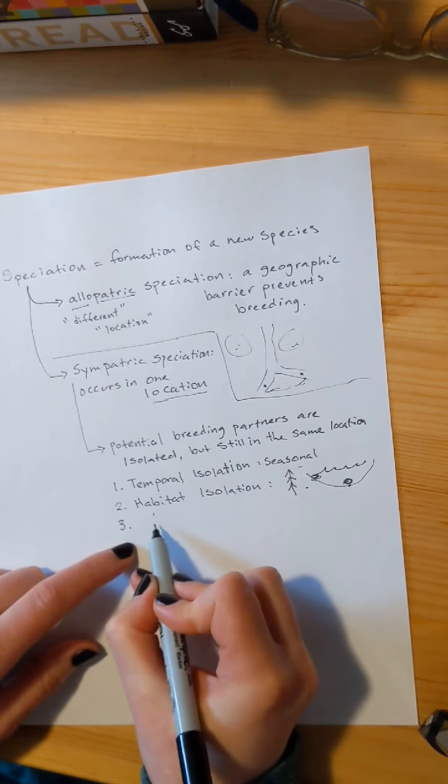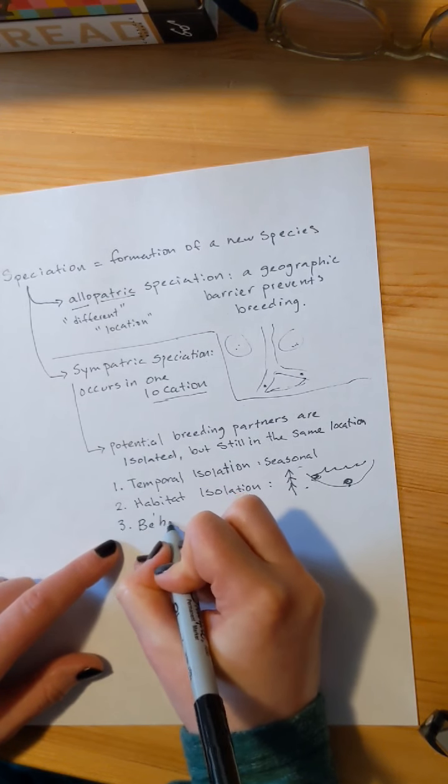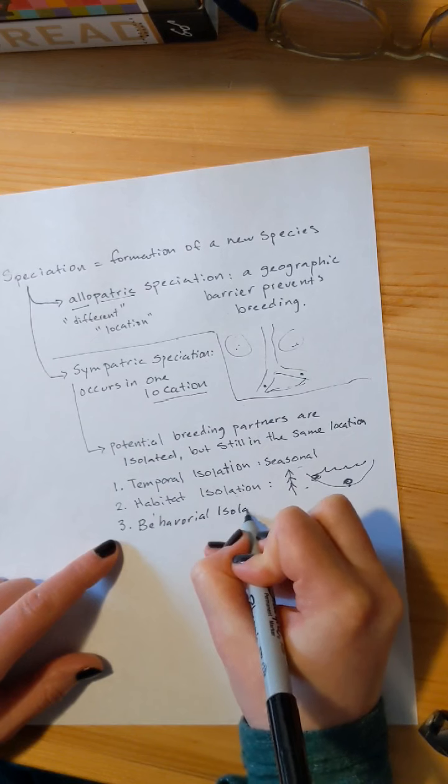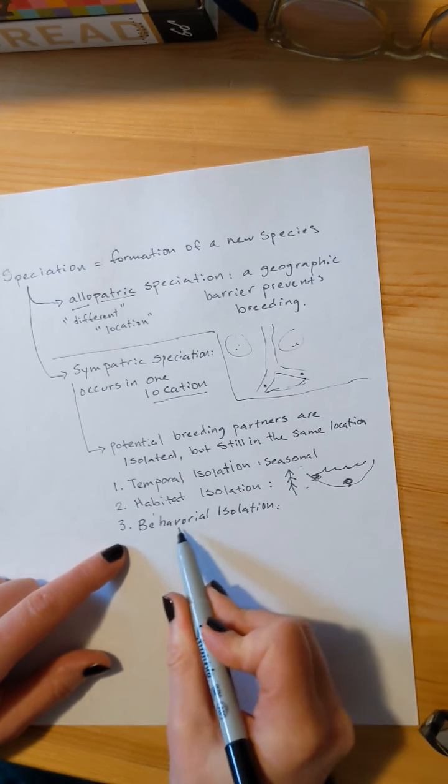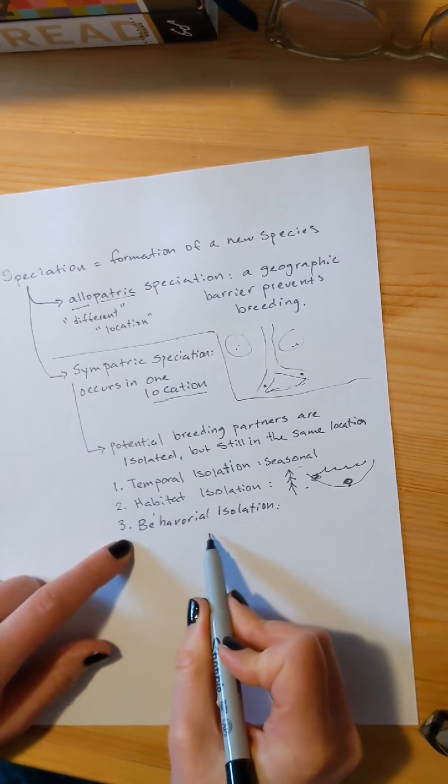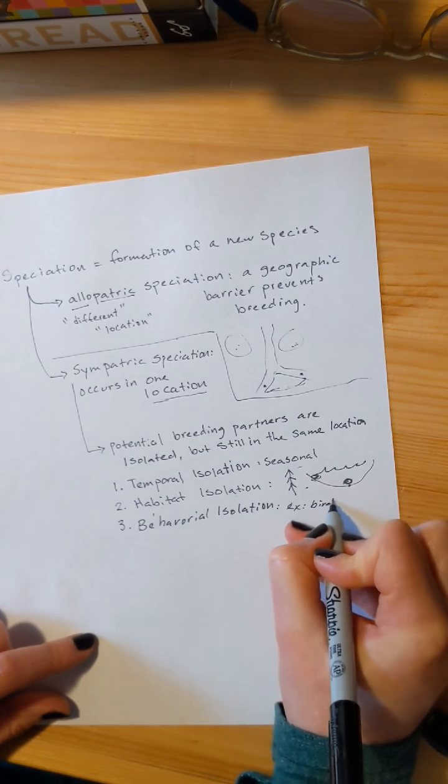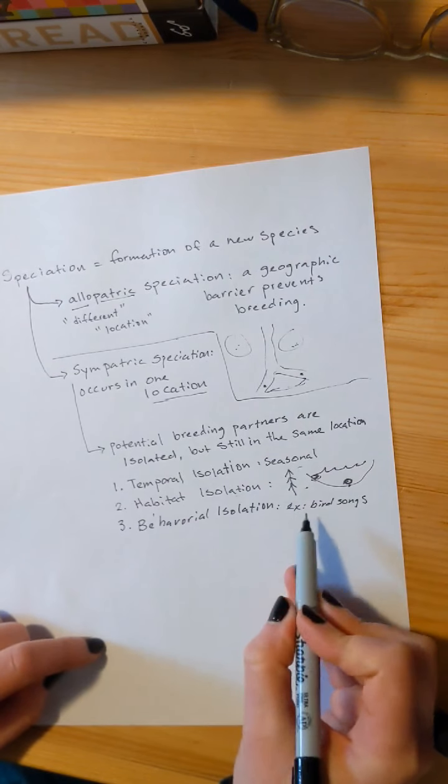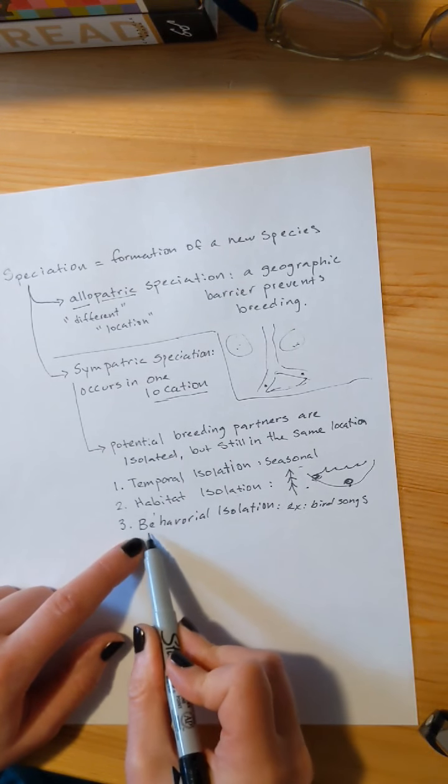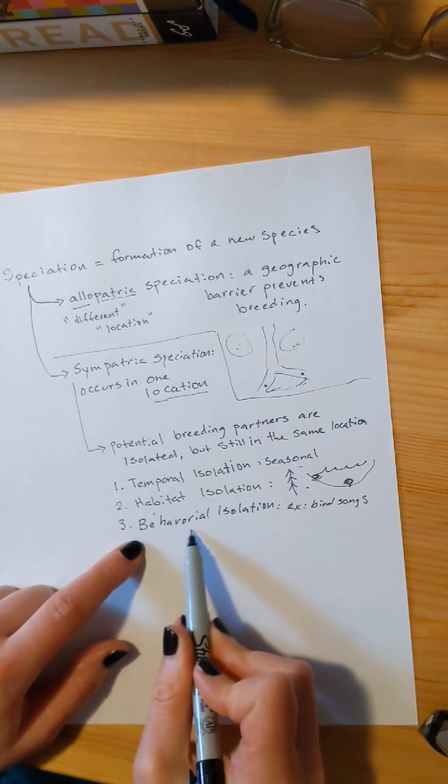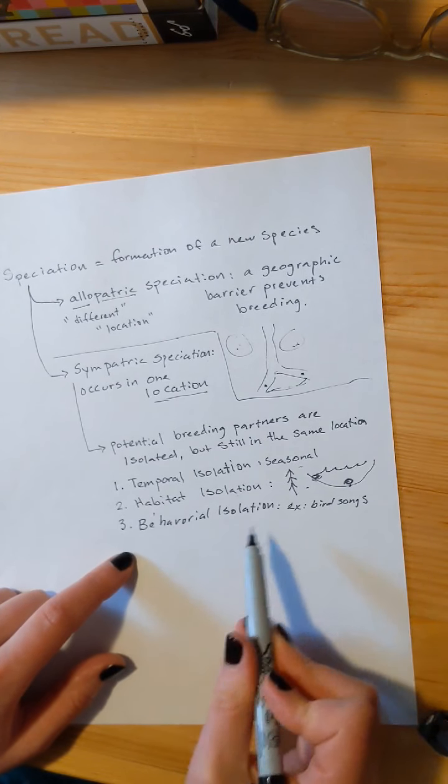The third way that we could end up with different species in the same location, sympatric speciation, is behavioral isolation. So behavioral isolation is when the two organisms don't recognize each other as mates. They could be standing right next to each other, but they sing different songs, an example would be bird songs, or they have different feathers, or they have different types of mating displays. Or if you want to extrapolate to humans, they chew with their mouth open, and you find that unbearable. That would be behavioral isolation. You would not mate with that person based on one of the behaviors that they are exhibiting.